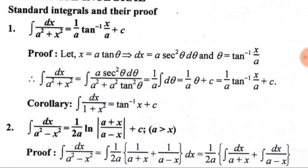Taking a² common from the denominator, 1 plus tan²θ can be written as sec²θ. This sec²θ in the denominator and sec²θ in the numerator cancel each other, leaving dθ. So after calculation we get (1/a)∫dθ. The integral of dθ is θ, and substituting θ back as tan inverse x by a, we get (1/a)·tan inverse(x/a) plus C.